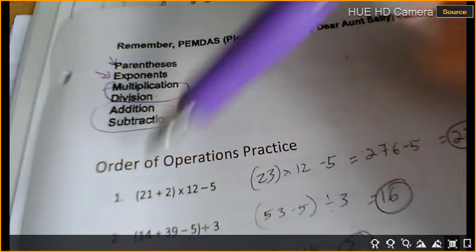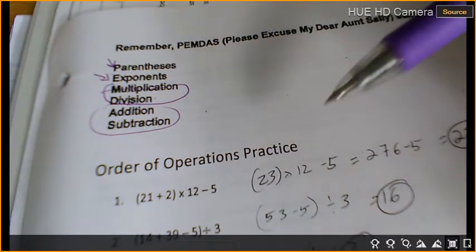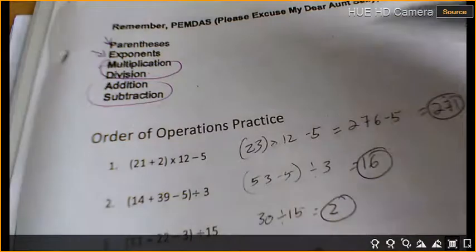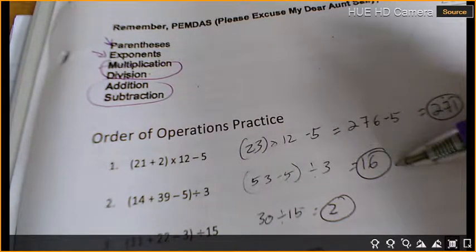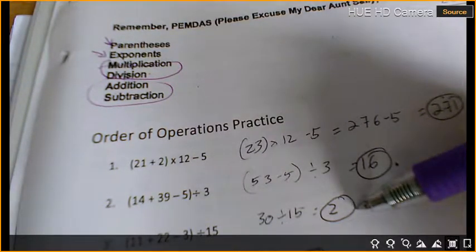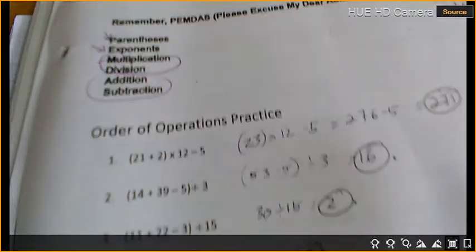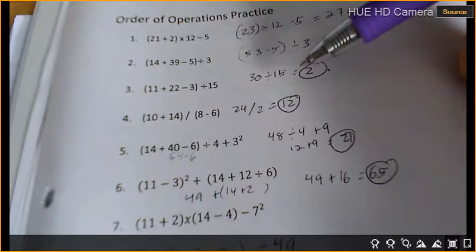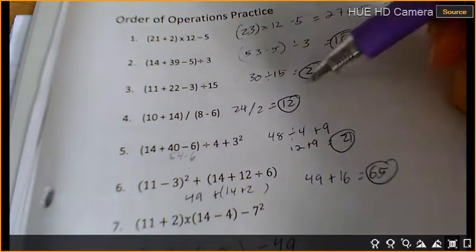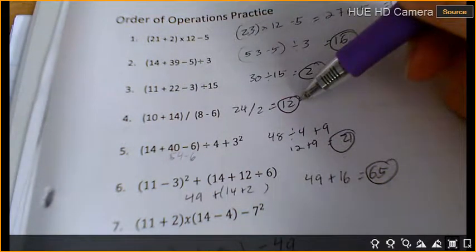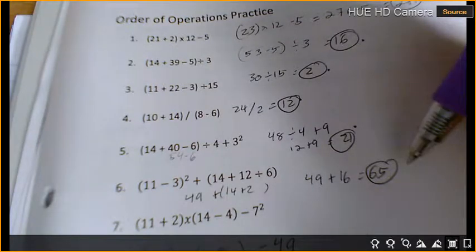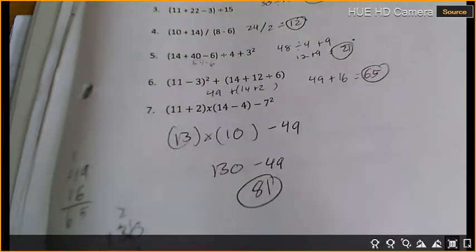So first I did my parentheses, then multiplication, then subtraction. I got 271. Number two, I've got 16. Number three should be 2. I'm going to do all the answers and then we'll go over how we got them. Number four is 12. Number five is 21. Number six is 65. And number seven is 81.